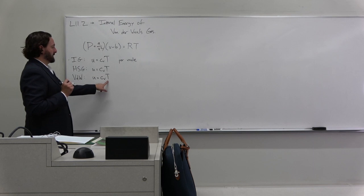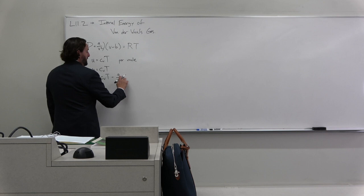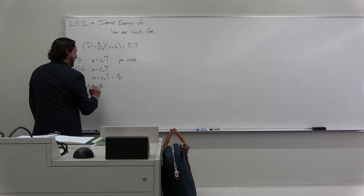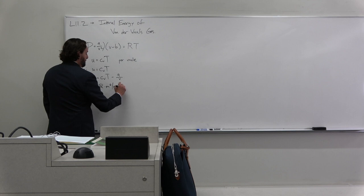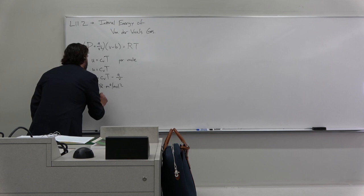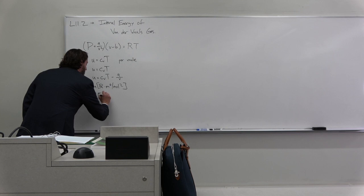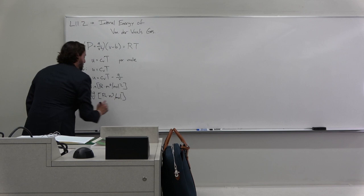And we can imagine just looking through dimensional analysis at what this should be. It's going to have to be A over V. Let's check our units. We said A had pascals per meter to the sixth mole squared. So we need to have, A over V is going to have units of pascals meter cubed per mole.